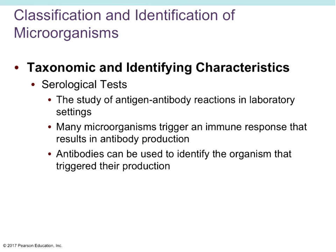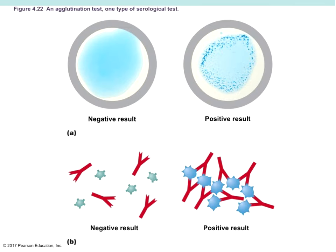We can also use serological tests to identify bacteria. Many microorganisms trigger an immune response resulting in antibody production, and those antibodies can be used to identify an organism. The agglutination test is one type of serological test — we use this for blood typing. If you have type A blood, we put anti-A antibodies into the serum and look for agglutination. If agglutination occurs, you have type A blood. The same procedure can be done with bacteria.